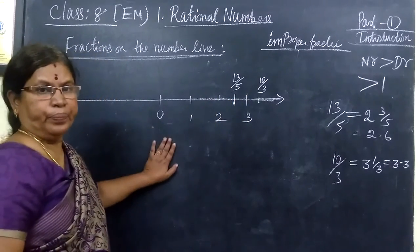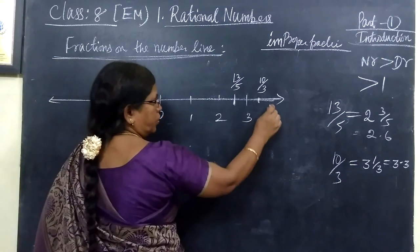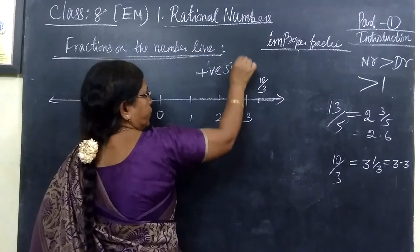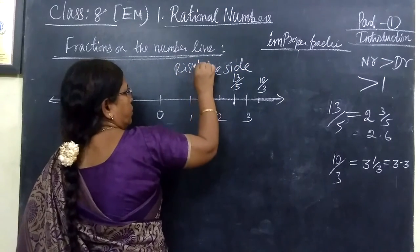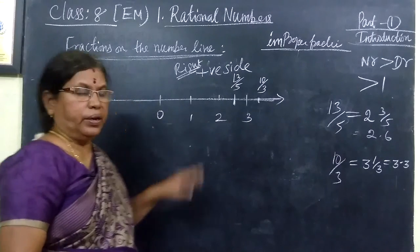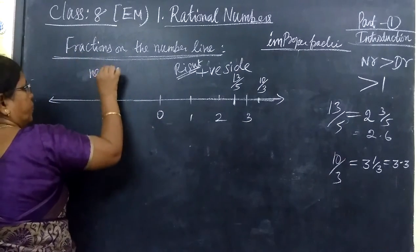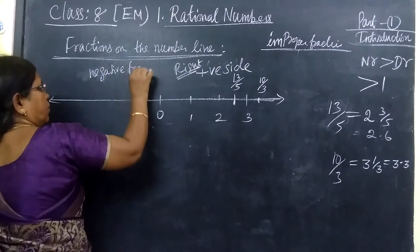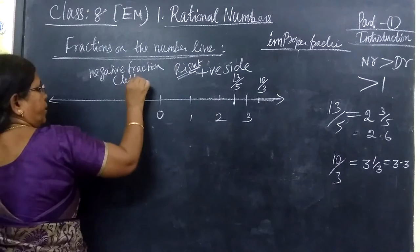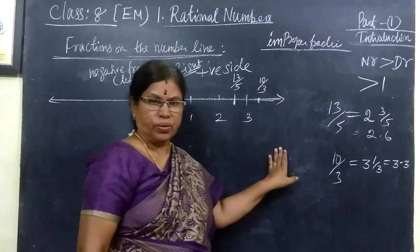And in this way you can extend it. From zero to positive side. Right side. You are getting positive fraction. Suppose if you want to get negative fraction. Here you are getting negative fraction. Left side. Left side of zero.